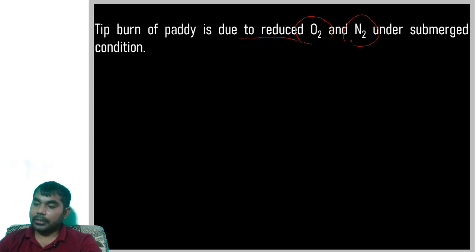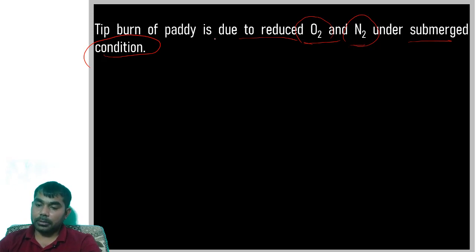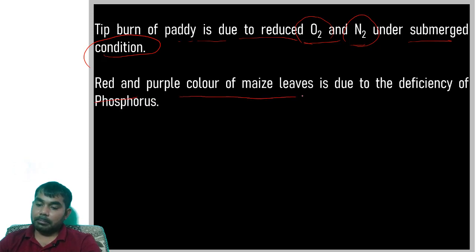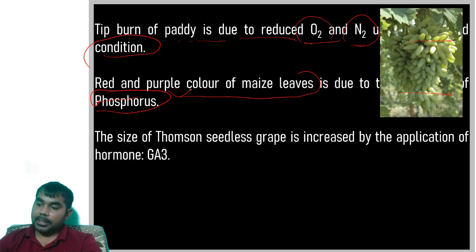Tip burn in paddy is due to oxygen and nitrogen imbalance under submerged conditions. Under submerged conditions, the tip of paddy burns. Red and purple color of maize leaf is due to deficiency of phosphorus.